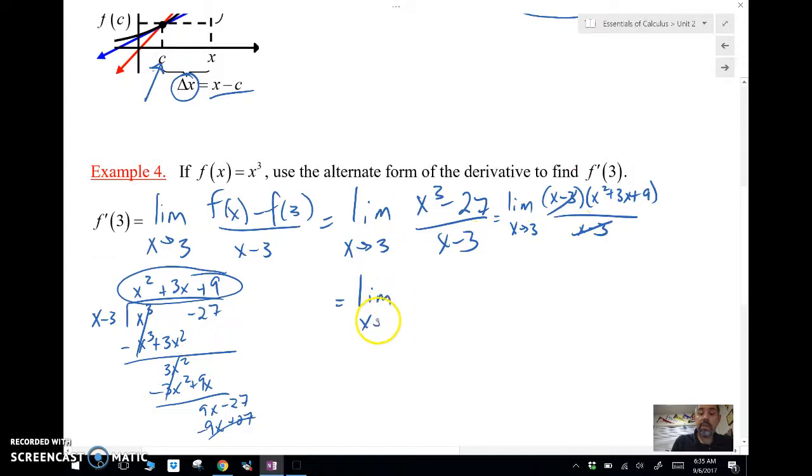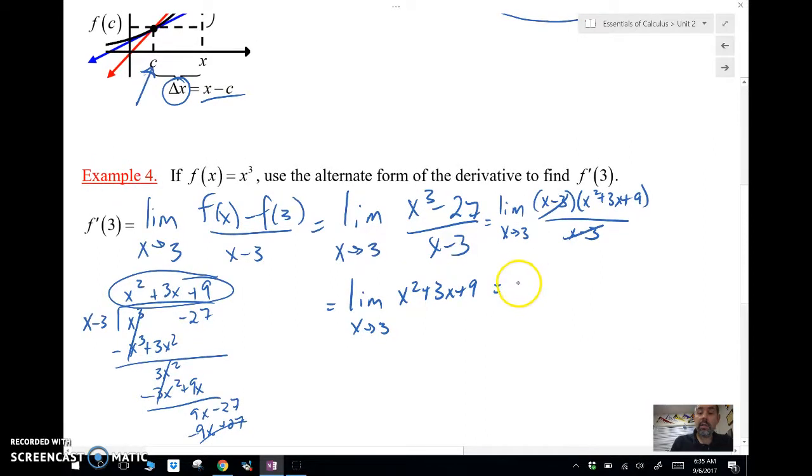We have the limit as x approaches 3 of x squared plus 3x plus 9. Then we'll plug in 3. 3 squared is 9, 9 plus 9 plus 9 is 27.